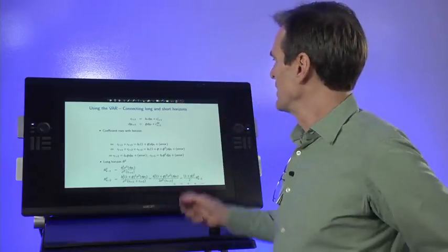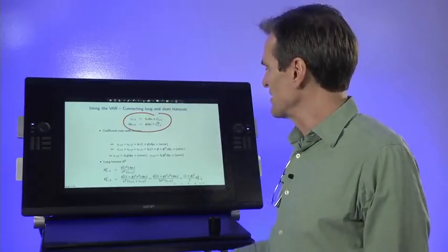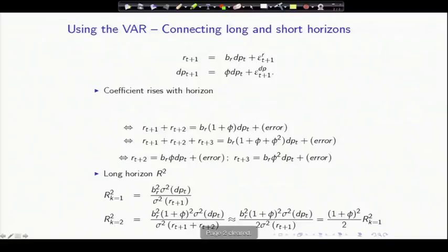What the vector autoregression shows us is that long horizon predictability is exactly the same thing as short horizon predictability when the forecasting variable moves slowly over time. So the equations let us do that. This is the relevant part of the VAR. We just need those two equations, returns and dividend yields. So let's look at a long-run return forecast, the forecast of two-year returns. That's the first one, BR times DP, but then the second one is RT plus 2, the second-year return. That's going to be BR times phi DP, next year's dividend yield plus an error. Similarly, the three-year return is BR times 1 plus phi plus phi squared. You can see what's happening right here.